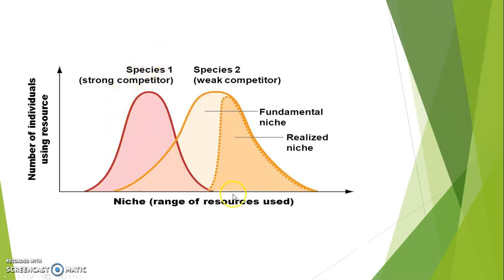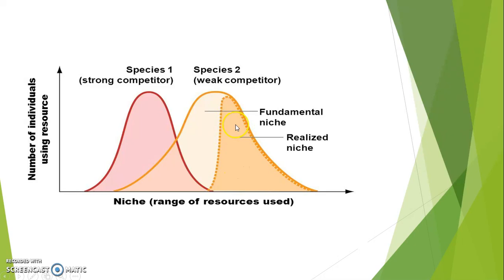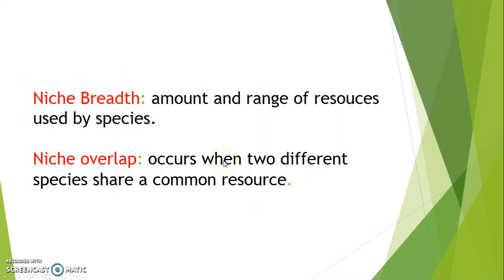Through this diagram, the x-axis shows the niche — the range of resources used — and the y-axis shows the number of individuals using the resource. Species 1 is the strong competitor and Species 2 is the weak competitor. The yellow or cream-colored area represents the fundamental niche and the orange-shaded area represents the realized niche. Niche breadth is the amount and range of resources used by a species, and niche overlap occurs when two different species share a common resource.